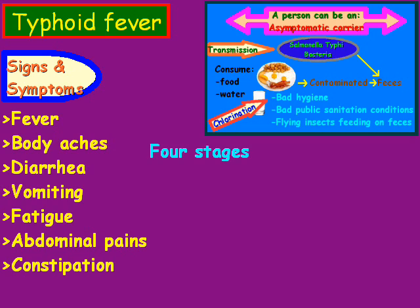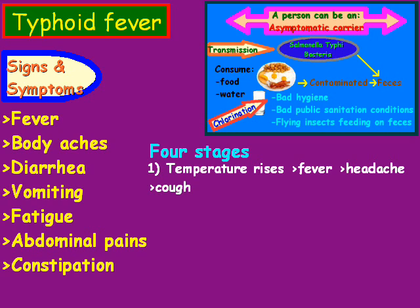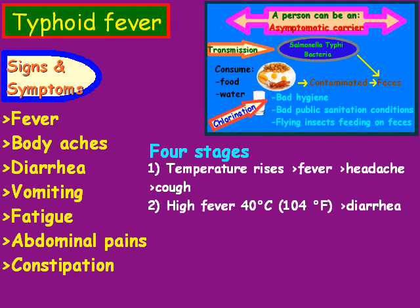Classically, there are four stages of typhoid fever. Stage 1 is where the temperature rises — there's a fever, headache, and cough. Stage 2 involves high fever plus diarrhea.